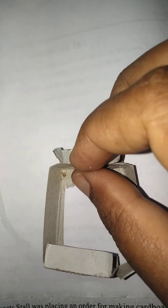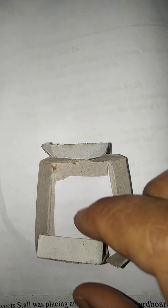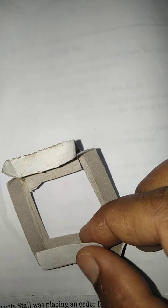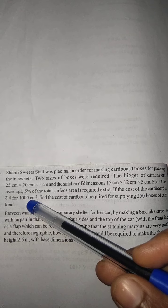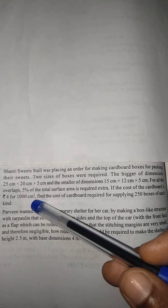If this is a box, children, these are the overlaps - means extra place what is required to make a box, that is known as an overlaps. Now coming to your question again, they have given rupees 4 for 1000 centimeter square.